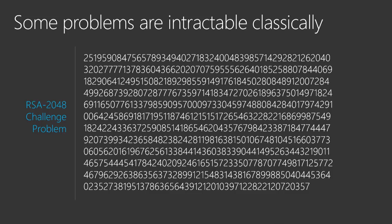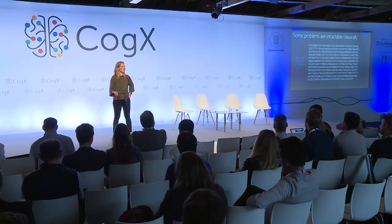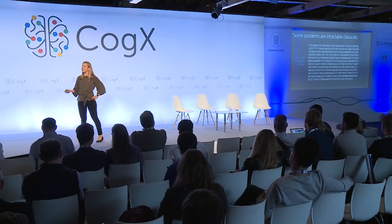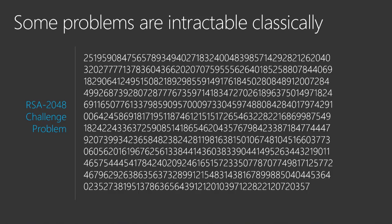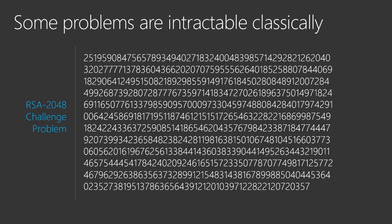Why quantum computing? Despite all the advancements we've made with conventional computing over the past fifty to sixty years — Moore's Law, doubling of transistor counts, seemingly limitless compute power in the cloud today — some problems remain completely intractable. This is an example of one of those: an RSA 2048 key. RSA cryptography underpins a lot of our modern economy; something like 80 to 90 percent of all web traffic is encrypted with RSA.